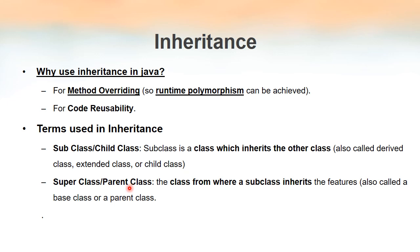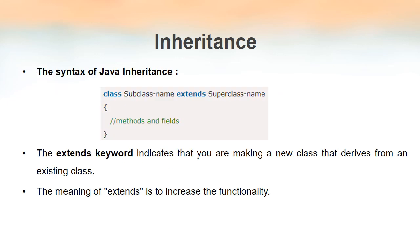Now we will define what is a child class and what is a parent class. A child class, or subclass, is a class which inherits another class — it is the new class that copies the properties from an already existing class. The already existing class from which we copy the features is known as a superclass or parent class. To implement inheritance, we use the keyword 'extends'.